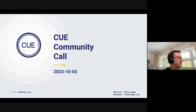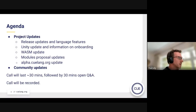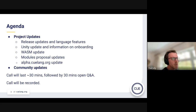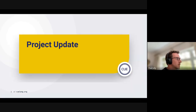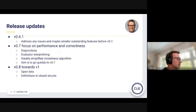Welcome everybody who's joined. This is the October edition of the Q Community Call. As usual, we're going to start with a few project updates, all those points listed there and as listed in the GitHub discussion. Please feel free to jump in with questions along the way, but we will have a dedicated Q&A session at the end. We'll keep updates as short as possible, aiming for about 30 minutes. Handing over to Marcel for a discussion around release updates.